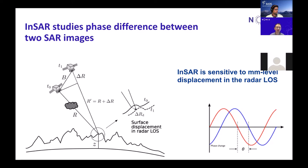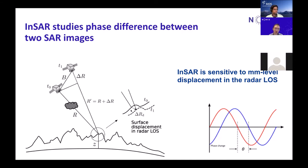In the geometry cartoon, you see two satellite observations named t0 and t1 looking at the same point on the ground and measuring the distance to the target. The main idea is that if there is a shift in the ground — meaning the distance from the satellite to the ground is changing — we have a very sensitive instrument to detect this subtle change in distance by looking at the phase difference between these two radar observations.